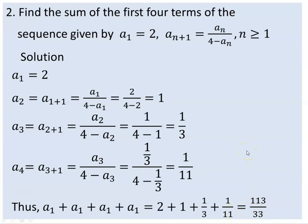So the sum of the first four terms of the sequence given by this recursive relation is 113 over 33.